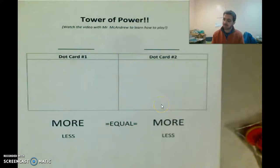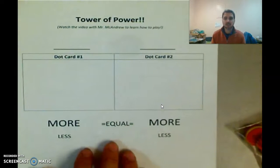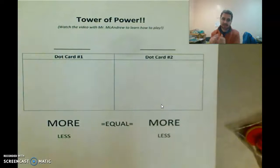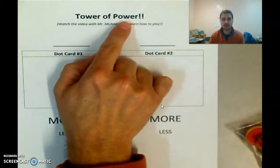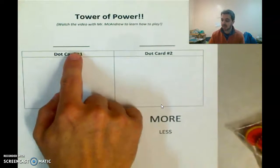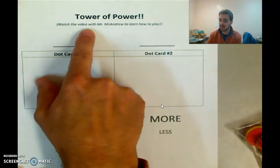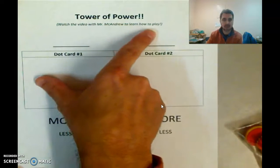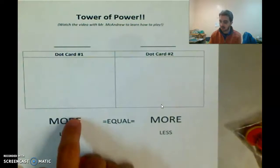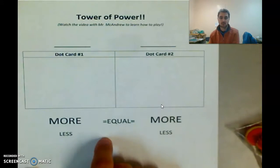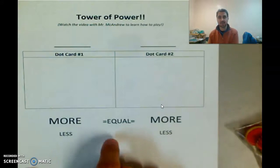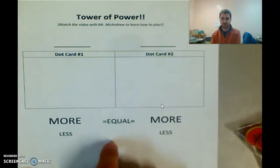Let me show you how this game works. In your math packet, can you take out this piece of paper and carefully take it out? It's called Tower of Power. It says watch the video with Mr. McAndrew to learn how to play. It has more and less words on it. This is the paper that you need. Pause the video if you need to, take that out, and then I'll show you what else you need to play the game.